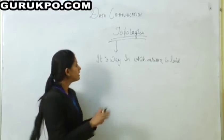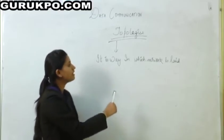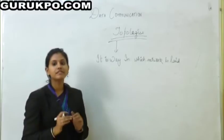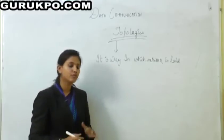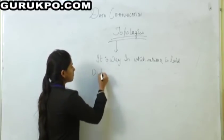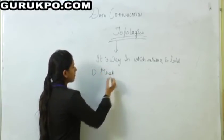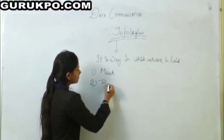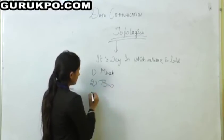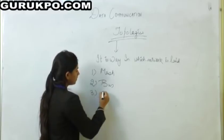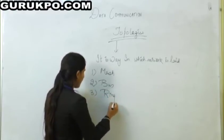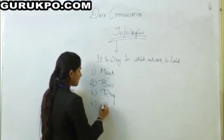Our next topic is topology. Topology is basically a way in which a network is laid. We have different types of topology: first mesh, second bus, third ring, and fourth star.